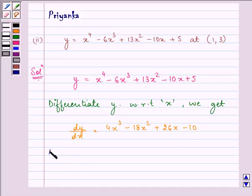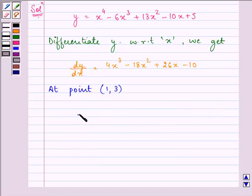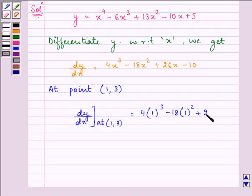Now we need to find out the value of dy/dx at point (1,3). Since we only have x in our dy/dx, the value will be 4(1) cube minus 18(1) square plus 26 into 1 minus 10, which is 4 minus 18 plus 26 minus 10. On solving we have 30 minus 28.